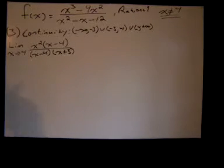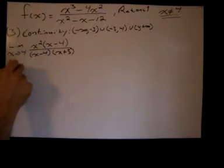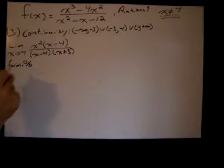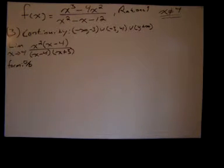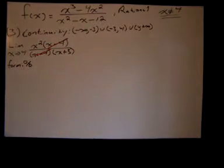The limit as x approaches 4, and I look at the form. The form of this limit is 0 over 0. But I notice that it's in factored form, and we factored it earlier, so this would be no surprise, that I can cancel that common factor of x minus 4. Now I no longer have the indeterminate form.